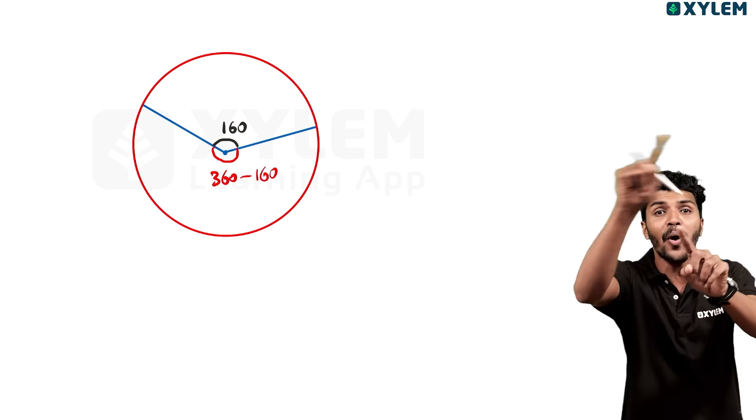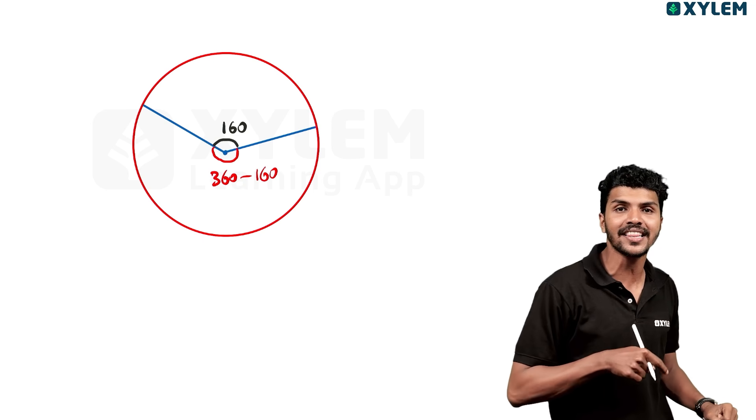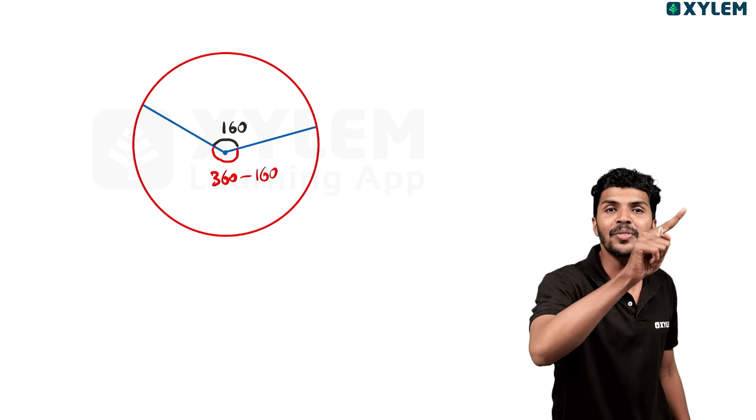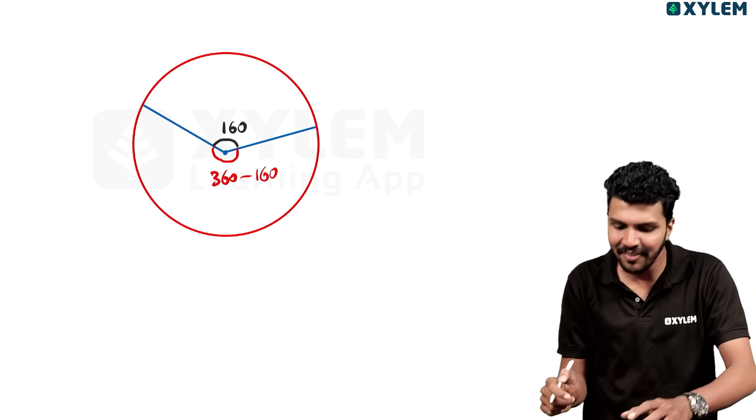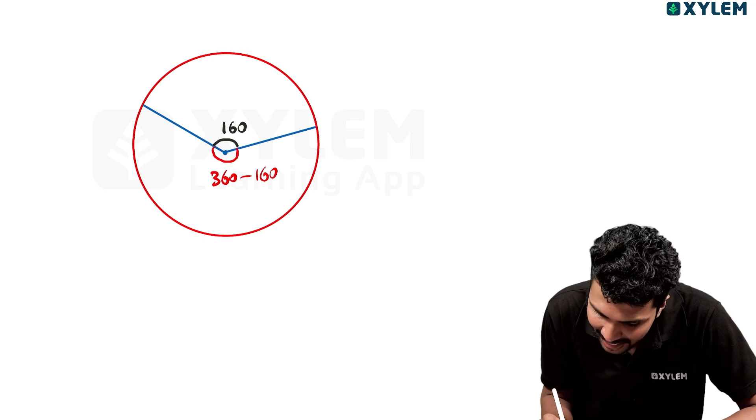Because the total angle of a circle is 360 degrees. So it is 360 degrees.